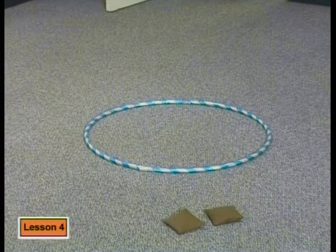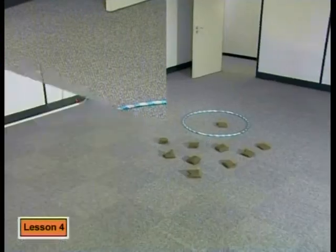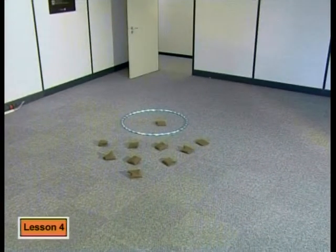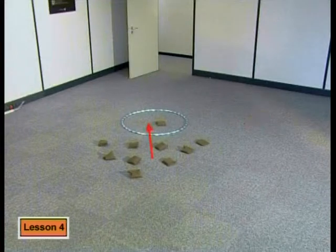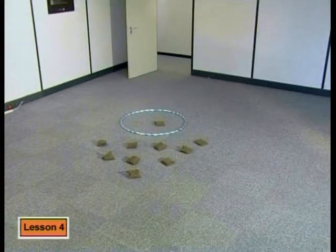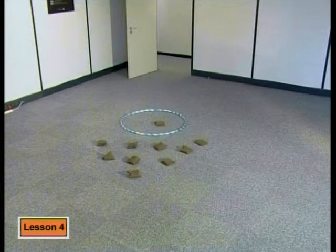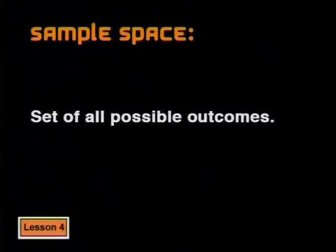It landed out of the circle this time. When the bean bag is thrown, it has to land somewhere in the room — it could have landed here, or here, or here. So the whole rectangular floor represents all the possible outcomes. In probability theory, when we represent all the possible outcomes visually like this, we call the space that represents all the possible outcomes the sample space. So the sample space is the set of all possible outcomes.